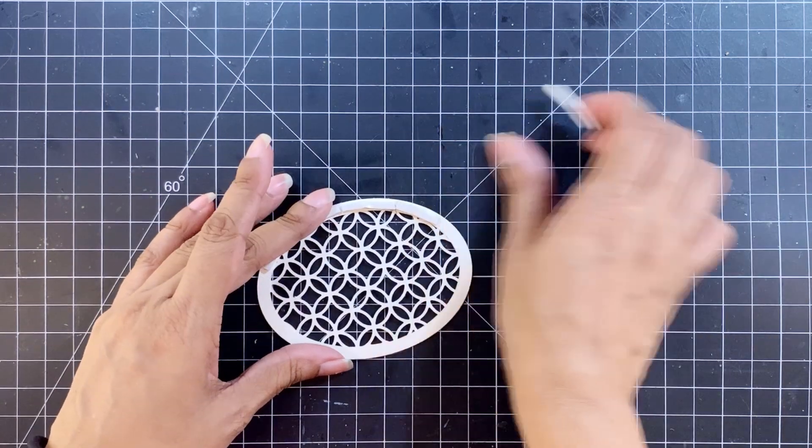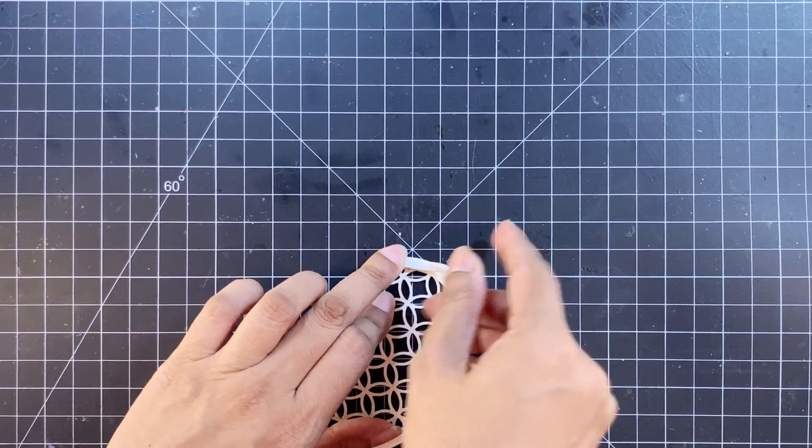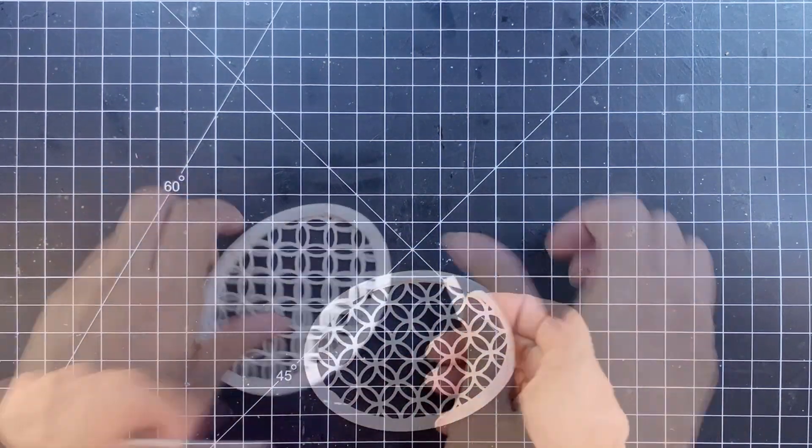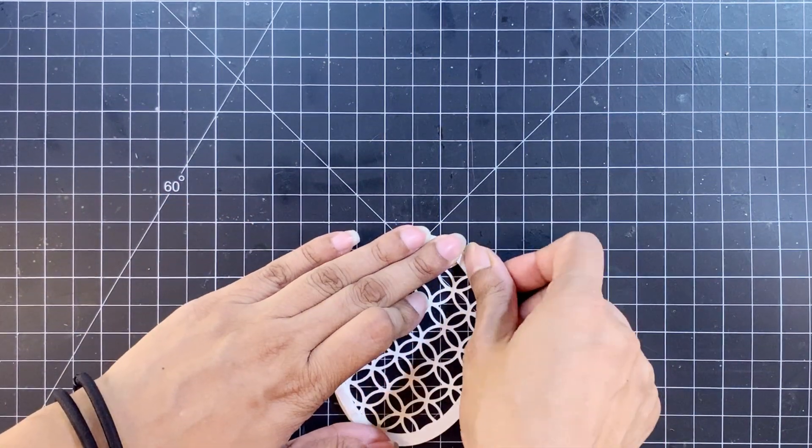I'll apply thin strips of foam tape behind the oval frame all around it. You can convert it into a shaker too if you want to. You'll just have to add a layer of acetate.